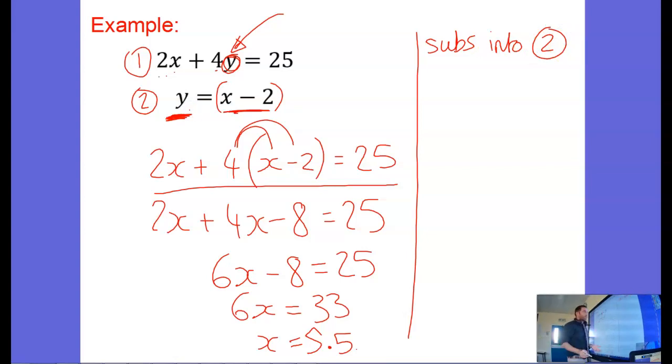So I've got y equals x, x is 5.5, and I'm going to subtract 2. So y equals 3.5.